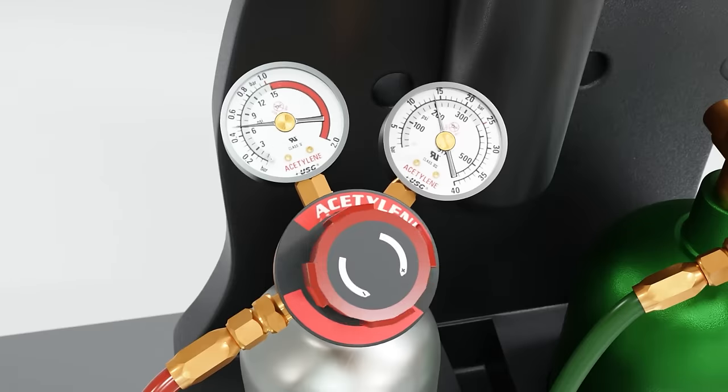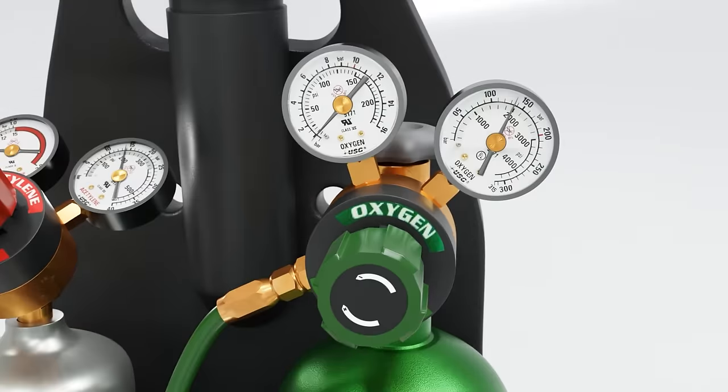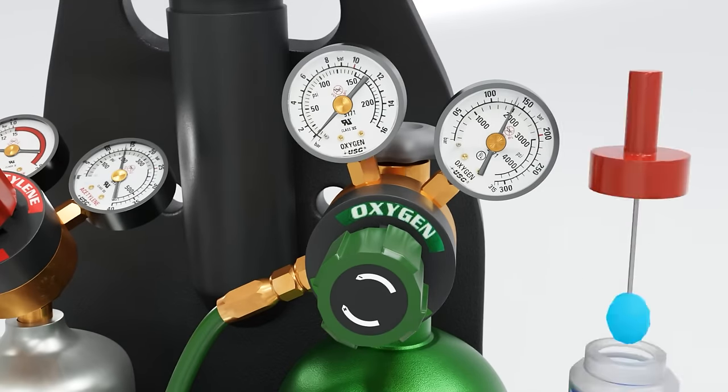Now set the pressure for your oxygen and acetylene regulators. When setting the pressure, the torch handles have to be open for dynamic pressure. And bubble test the hoses.